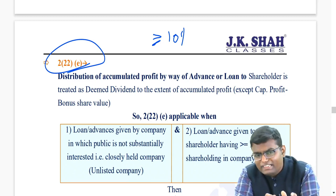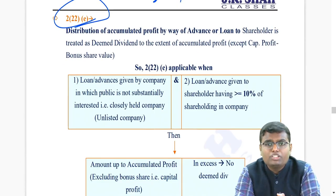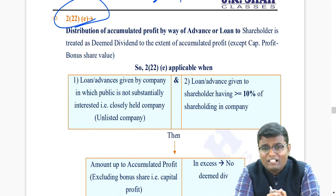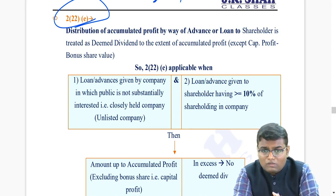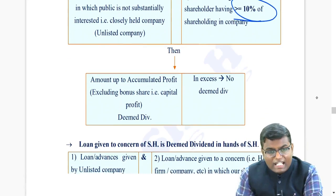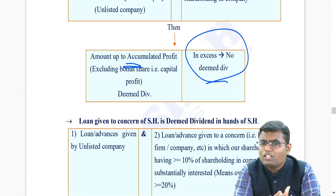Even if tomorrow that shareholder repays the loan, it does not have any impact - the amount will still be taxable. What is written is: distribution of accumulated profit by way of advance or loan to the shareholder is treated as deemed dividend to the extent of accumulated profit. While calculating this accumulated profit, please do not include bonus share values - capitalized profit is not to be treated as reserve and surplus. Section 2(22)(e) applies when: (1) loan or advance is given by a company in which public is not substantially interested, and (2) that shareholder has at least 10% shareholding.